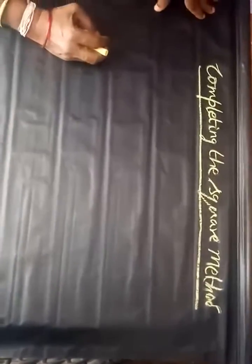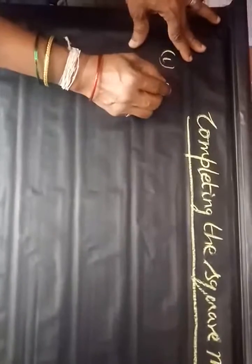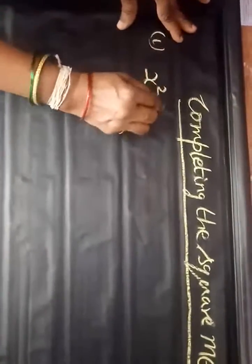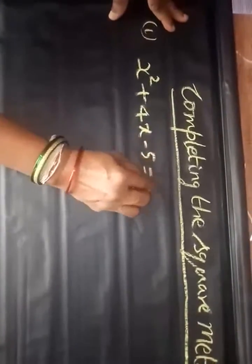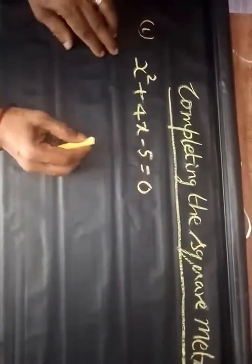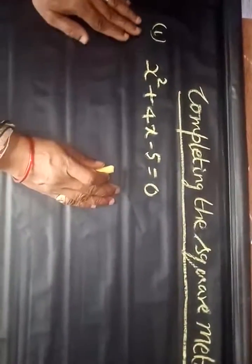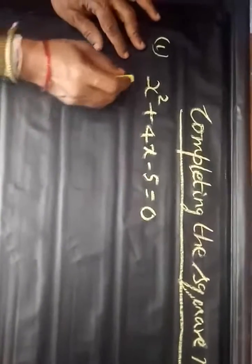Today, we look at factorization using one more method — the completing the square method. First, I will take one example to make sure you understand this. The first equation is x squared plus 4x minus 5 equals 0. This is of course a quadratic equation. How do we find the factors by completing the square?